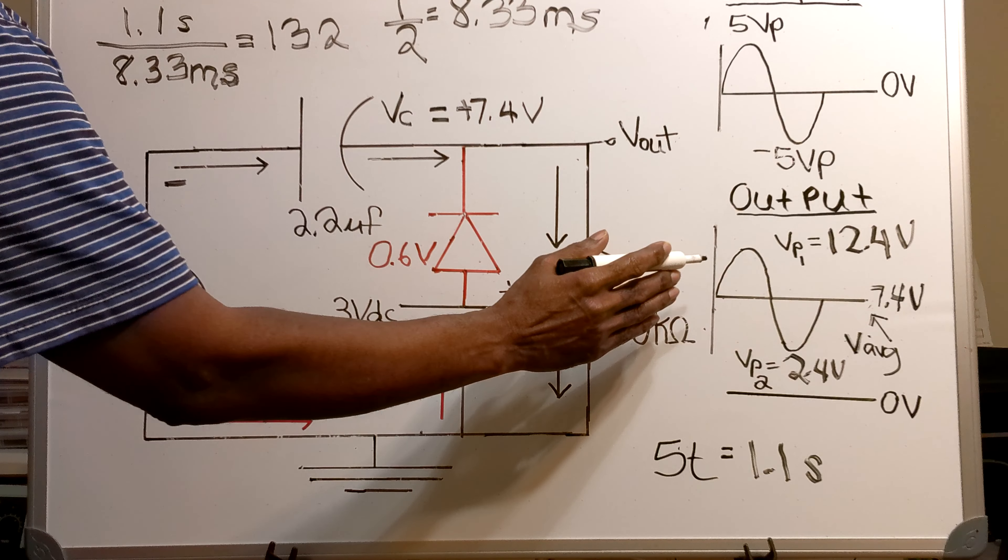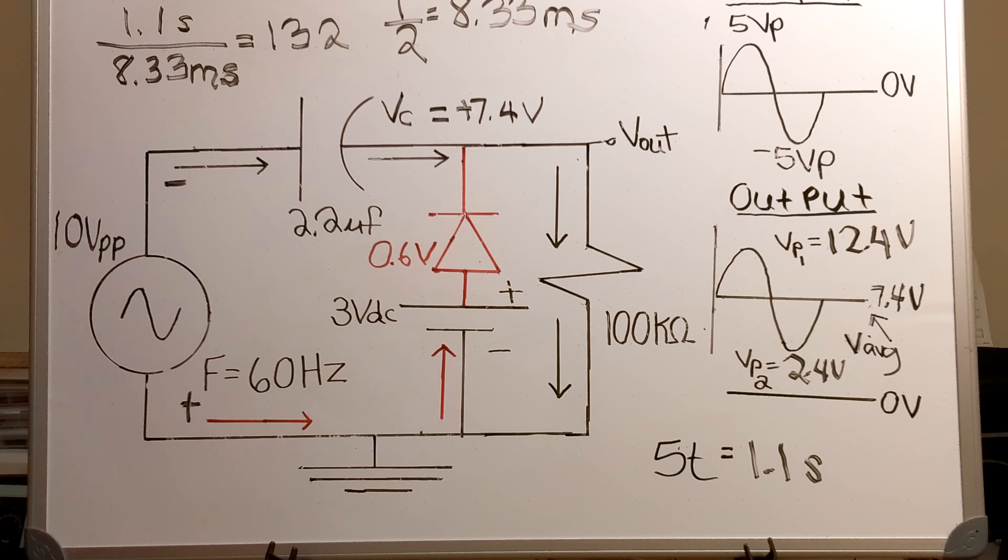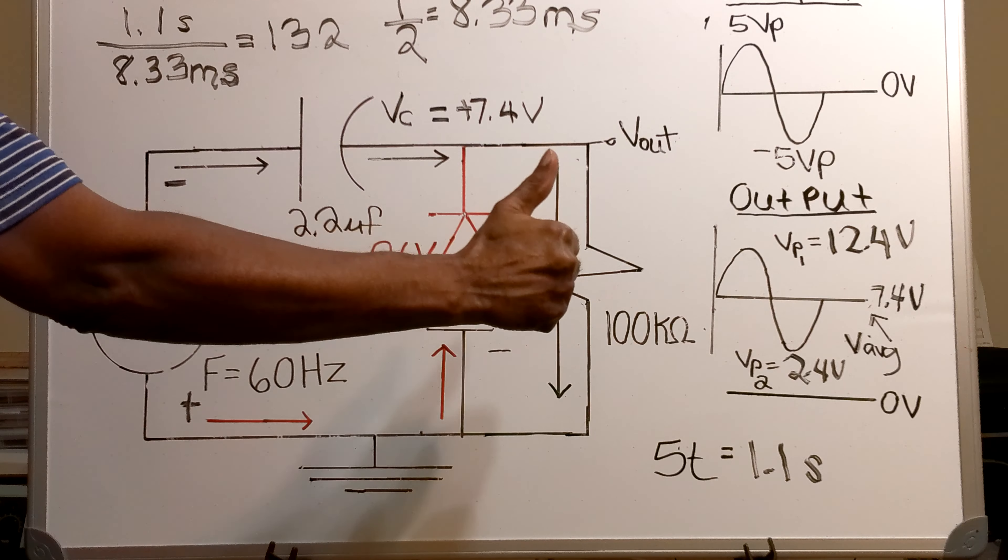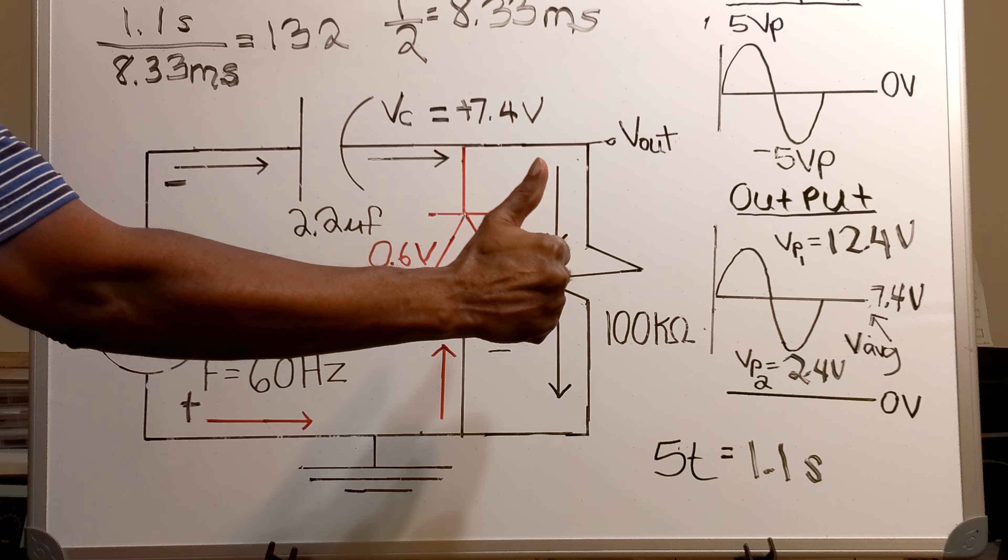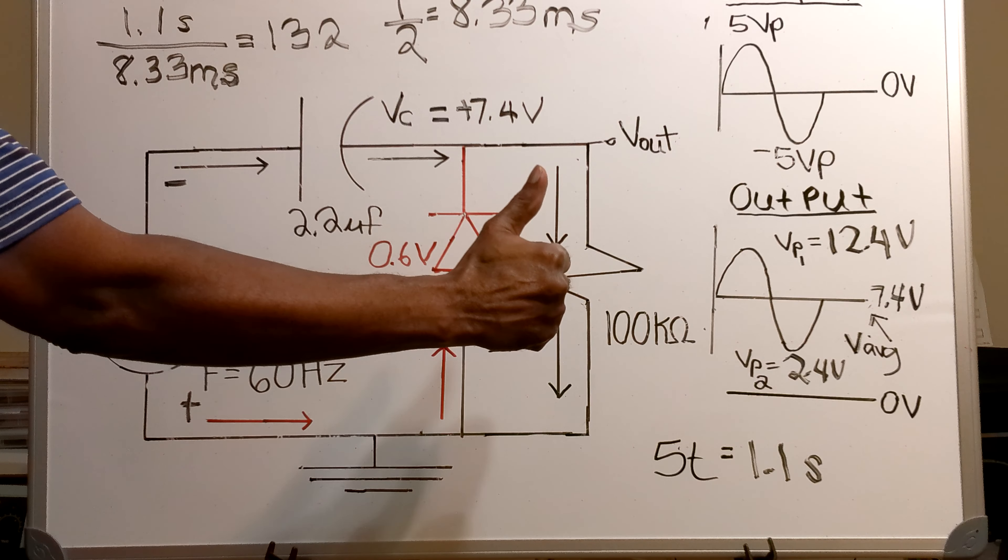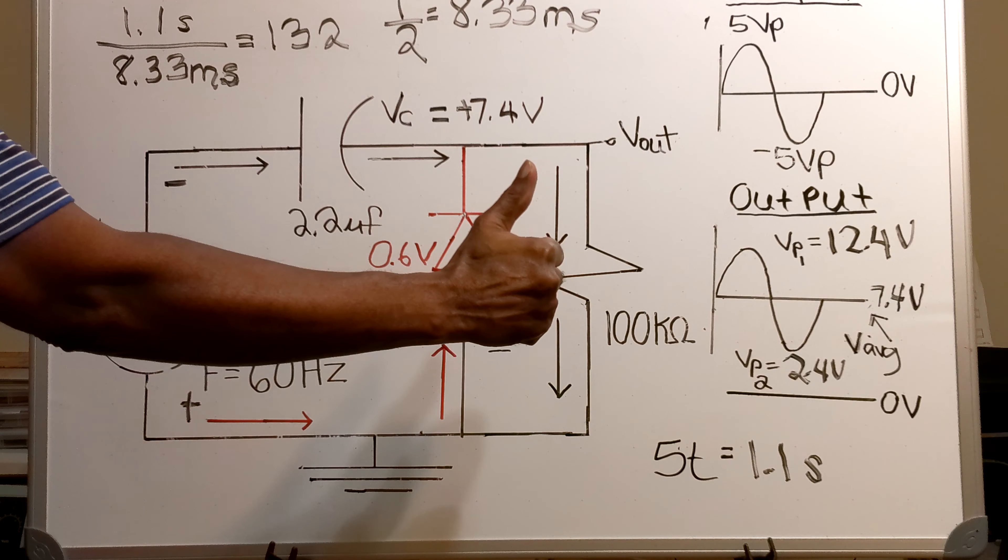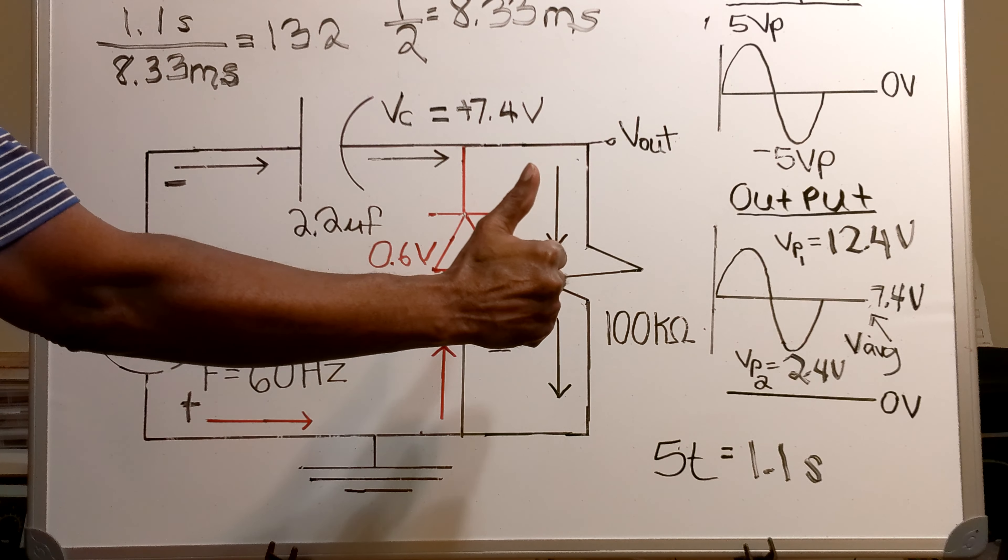Now the reason why that's important is because if this resistor is too small, you may get some output distortion on the output.